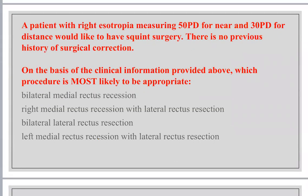MCQ: A patient with right esotropia measuring 50 prism diopters at near and 34 at distance would like squint surgery. The problem is greater at near, so surgery should be on the medial rectus. The most appropriate procedure is bilateral medial rectus recession.